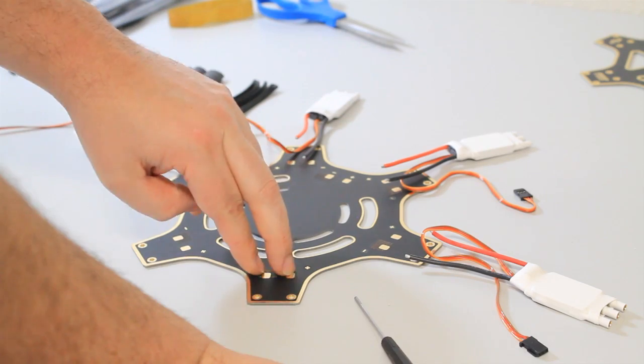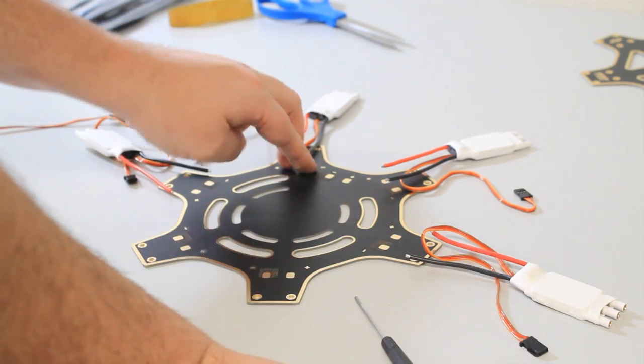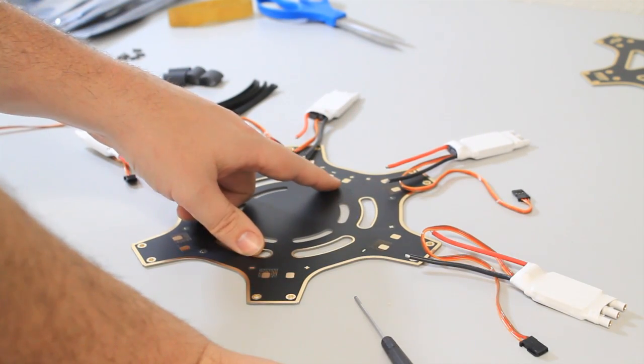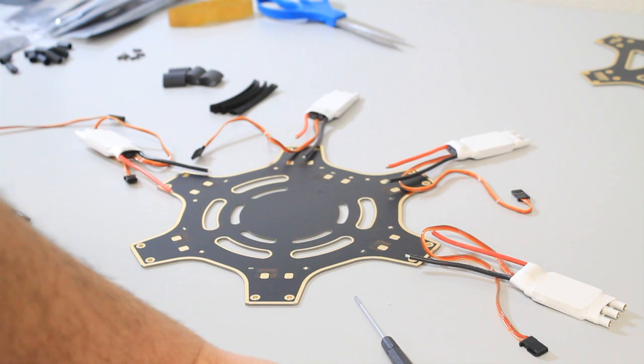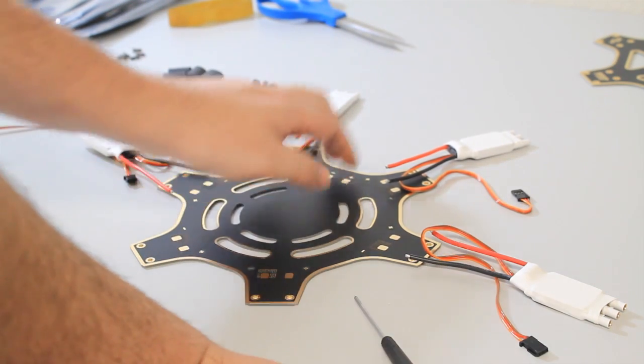Your ESCs are going to go on the ends of the arms. And then there's one other spot on the board right here. And that's going to be for your battery connector, your LiPo connector, whichever you decide to use. I'm going to use a Dean's. So I'll solder that on there.